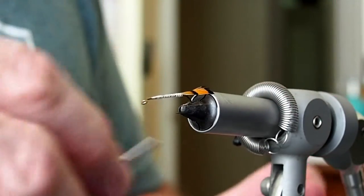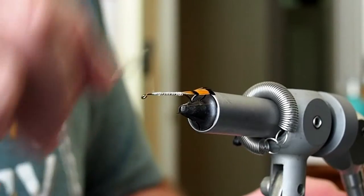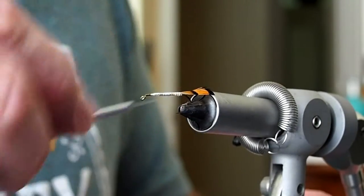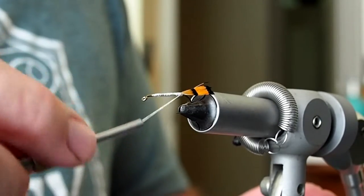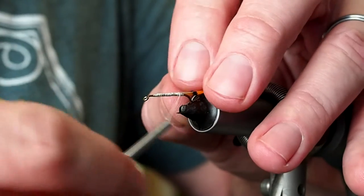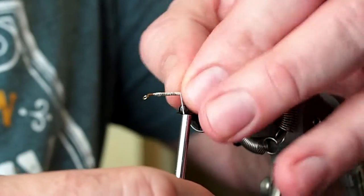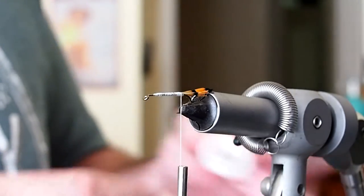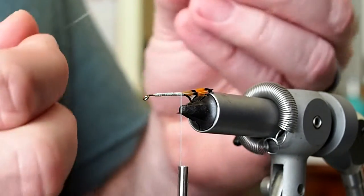We'll bring our thread back down to the tail. We're going to tie in some silver tinsel that we're going to use for ribbing. I need 6-8 inches of that.